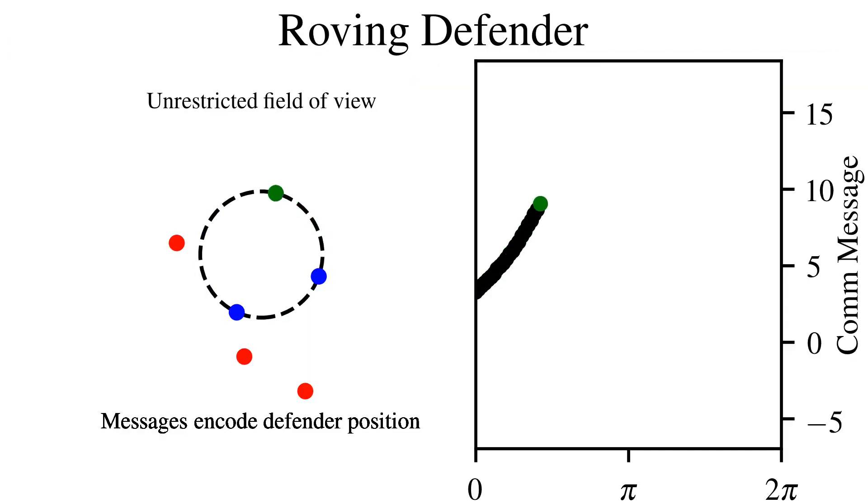When we give the defenders a complete view of the intruders, agents learn to summarize their own x-y position as something like a polar angle. They learn to omit information about attacker locations because it's common knowledge.